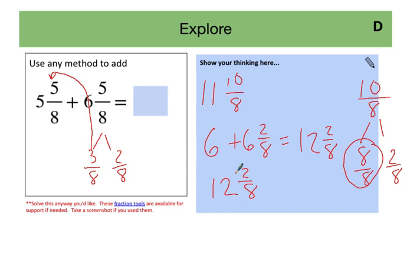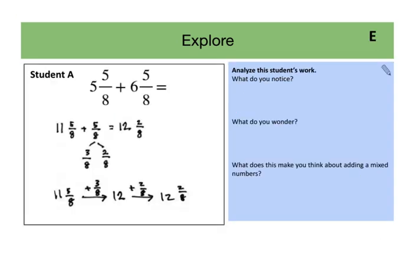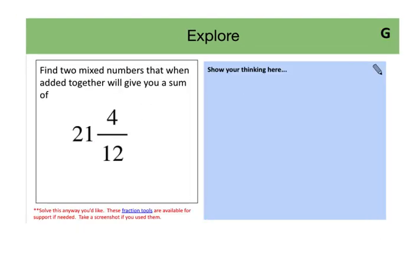So they might show you a bunch of different ways to get this answer. And that's great because it'll lead us into our next slide where we're looking for a bunch of different ways that students can solve problems. So here we are on slide G. This problem is much more open-ended. Student answers will vary, and for this problem students have to find two mixed numbers that when added together will give you a sum of 21 and 4/12.